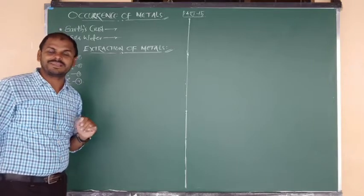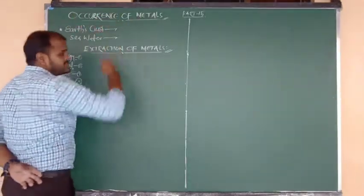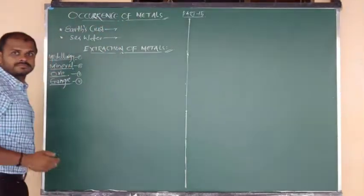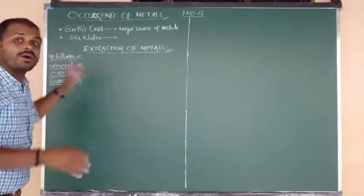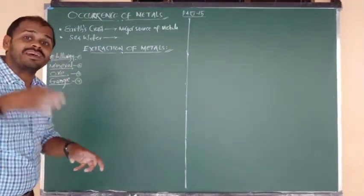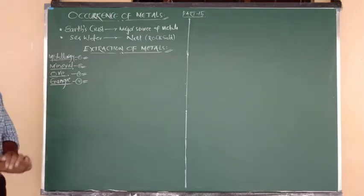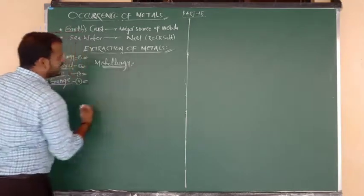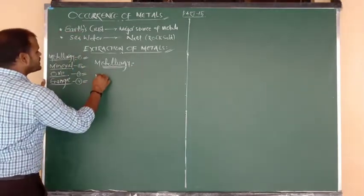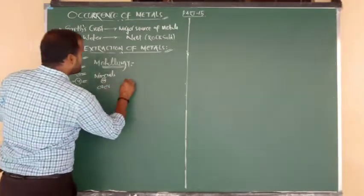Hello media students, welcome back to chemistry class. In the last class we covered the properties of ionic compounds — physical nature, melting point, boiling point, solubility, and conduction of electricity. Those topics are very important, so try to make a revision.